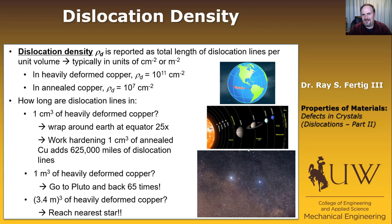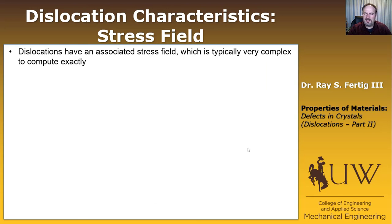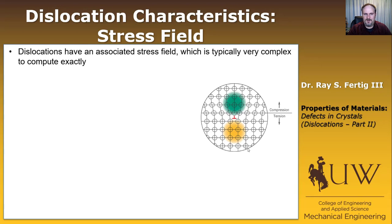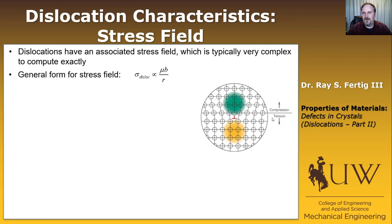Now let's run through some characteristics of dislocations. The first is the stress field. Dislocations have an associated stress field, which is typically very complex and difficult to compute exactly. With a simple model, the extra half plane of atoms puts the upper region in compression and the lower region in tension. The general form for a dislocation stress field is proportional to mu times B over R, where mu is the shear modulus, B is the Burgers vector magnitude, and R is the distance from the dislocation. At the dislocation core, the stress is infinite.